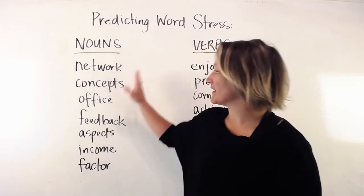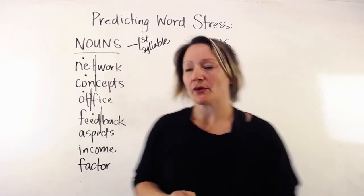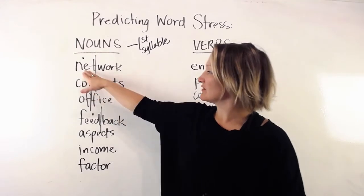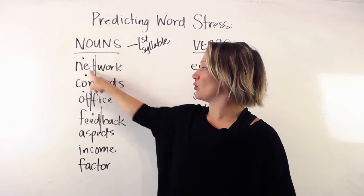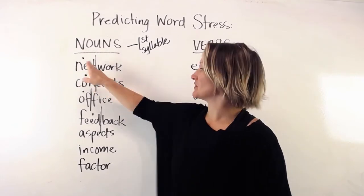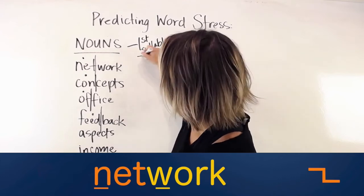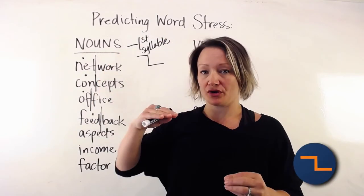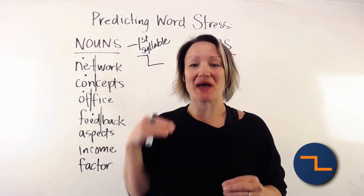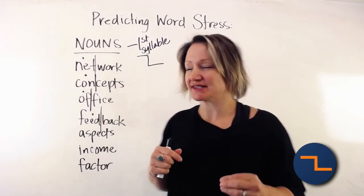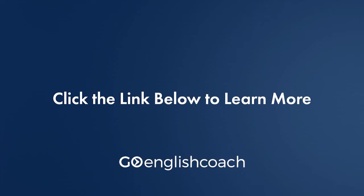What you should have noticed is that each of these words has two syllables and the stress is on the first syllable. So you're going to say 'NETwork' — you've got one, two — and the stress is on that first one. Network, office, feedback. You can see this pattern; it looks like a stair step pattern.